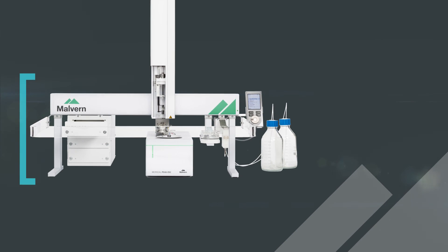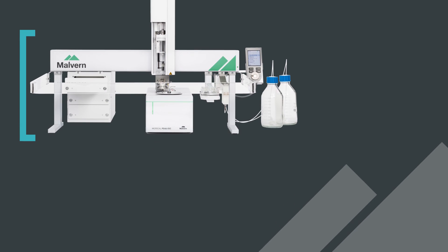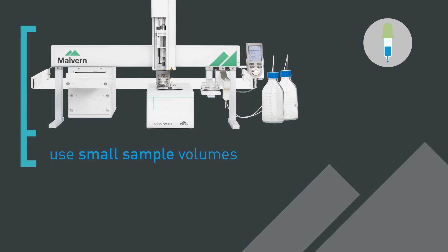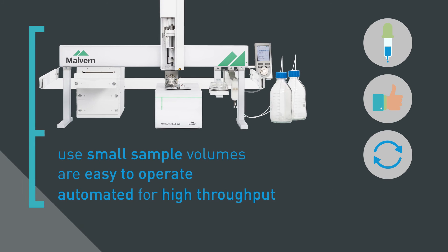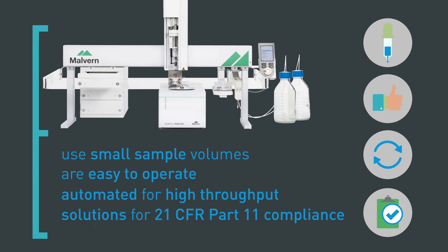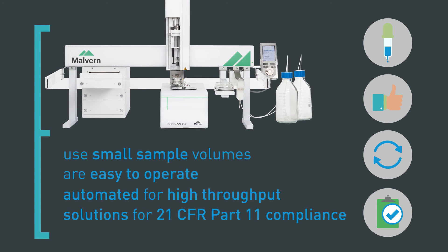Malvern's MicroCal Peak DSC systems use small sample volumes, are easy to operate, can be automated for high throughput of multiple samples, with solutions available for 21 CFR Part 11 compliance.